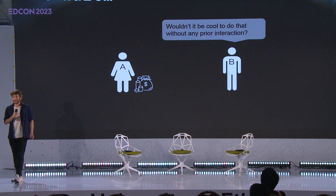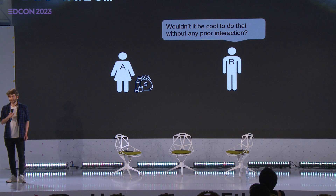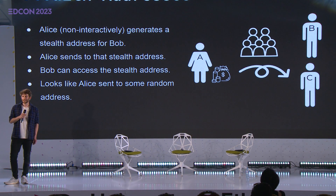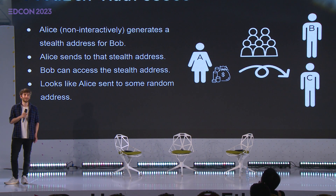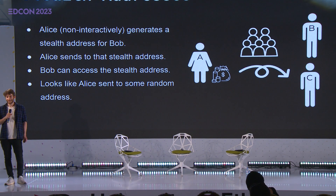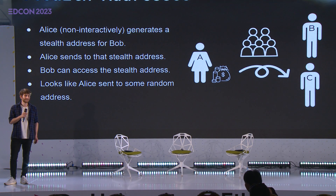The only problem is it needs some interaction beforehand. So at some point Bob would probably think, wouldn't it be cool to do the same but without requiring any prior interaction? And this is exactly the point where both of them might discover stealth addresses. Stealth addresses allow Alice to generate a fresh Ethereum address that has never been used, in the name of Bob. Alice would then just send the money to the new stealth address, knowing that only Bob will be able to access the funds there.